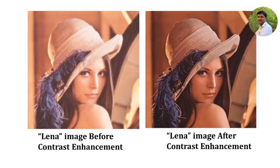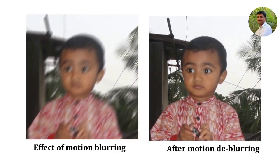You are seeing a popular test image in the image processing field called the Lena image. The first image is whitish in color, that is, it has a low contrast. In image processing, there are methods like histogram equalization which can enhance the contrast of the image. We will consider this in detail in the second unit. The image blurring may be due to improper focusing of the camera lens, or due to motion of the camera or the object during image capturing. The blurring of the image can be corrected by using image processing techniques.